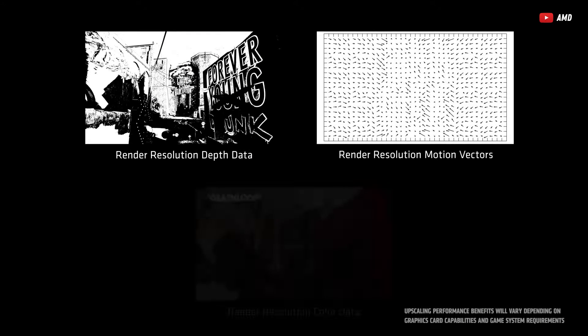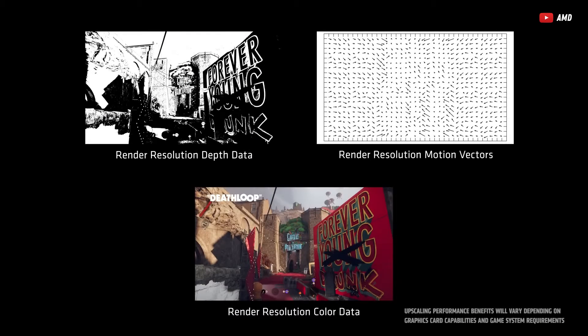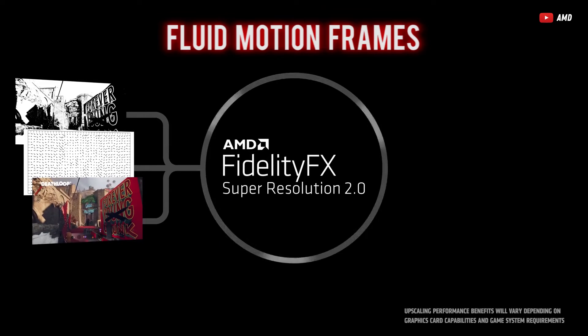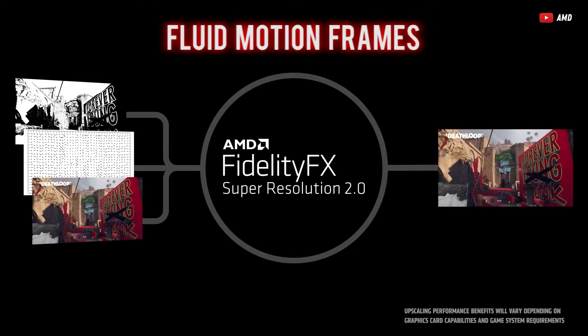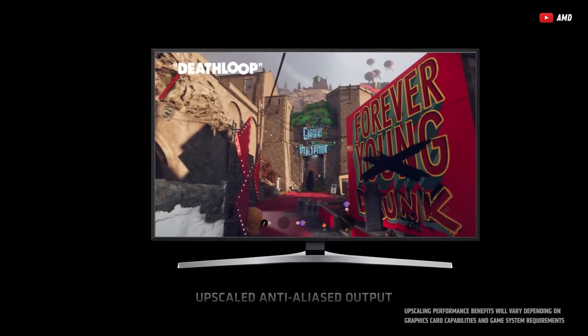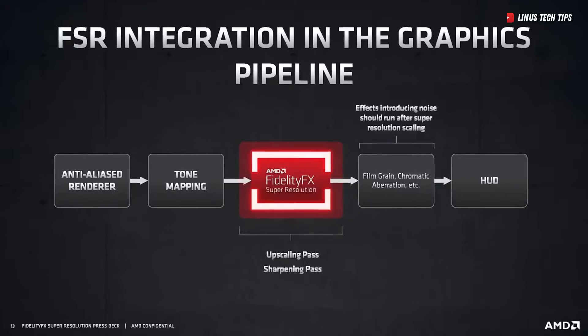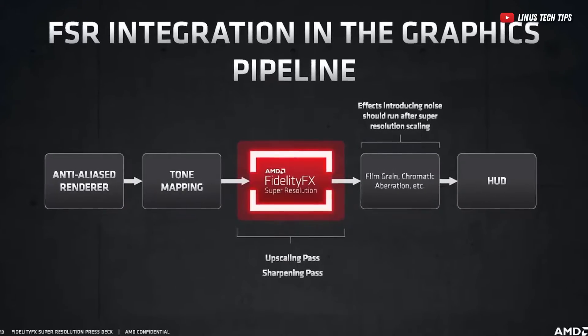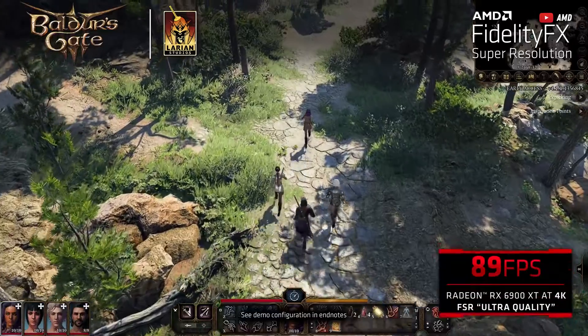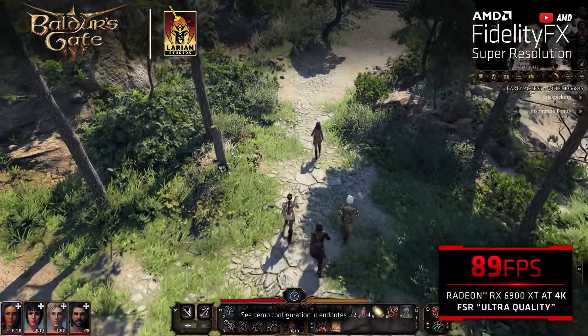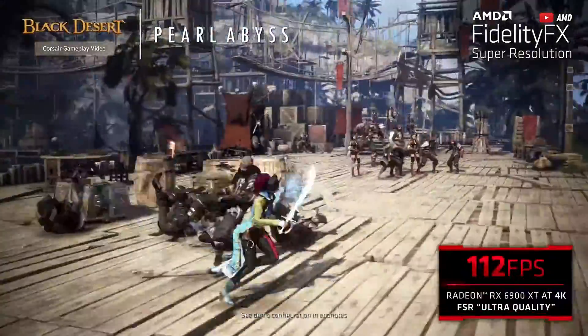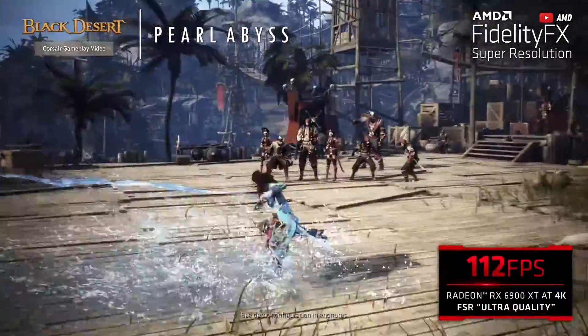But how does it all work? FSR uses a blend of temporal upscaling and AMD secret sauce — fluid motion frames — to make games look and feel smooth. Much like DLSS, FSR uses sophisticated upscaling algorithms to enhance both the performance and the quality of games.